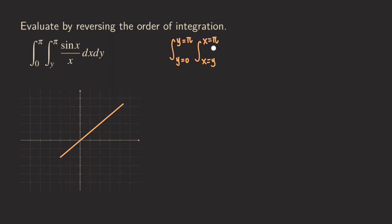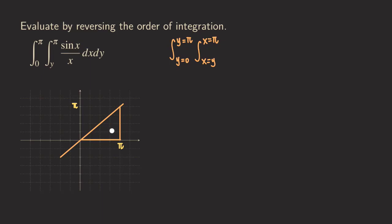Next we have x equals pi, which is a vertical line at pi. Marking pi on the axis — about four marks from the origin — we draw that vertical line. The limits for y go from y equals zero up to y equals pi. Drawing one more horizontal line gives us the region bounded by those three line segments, forming a triangular region.